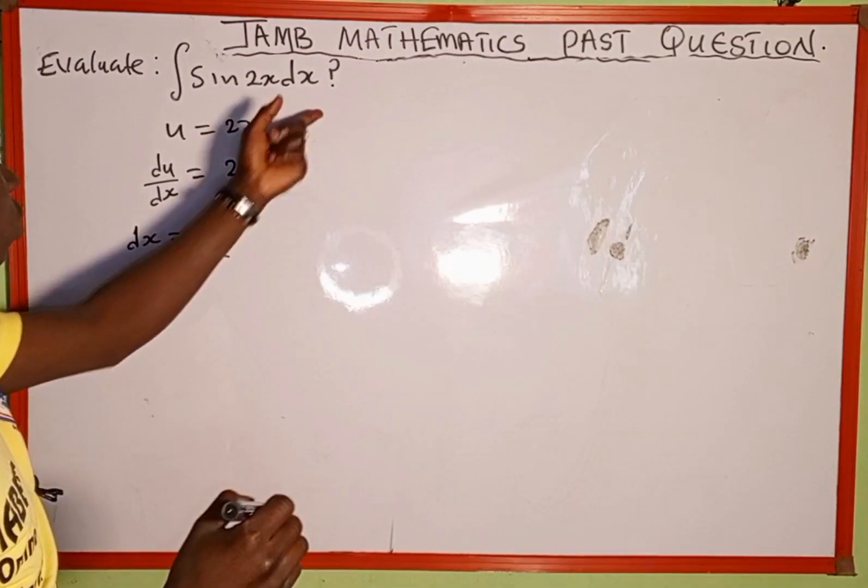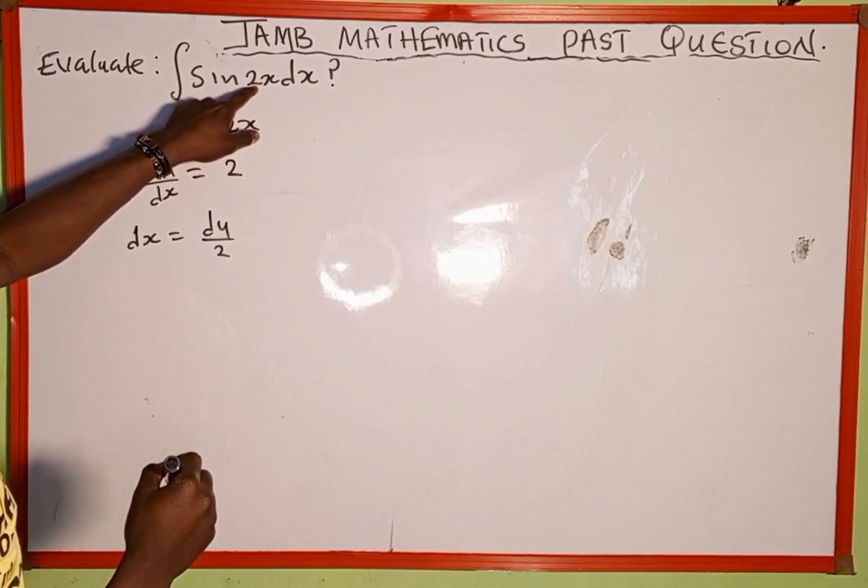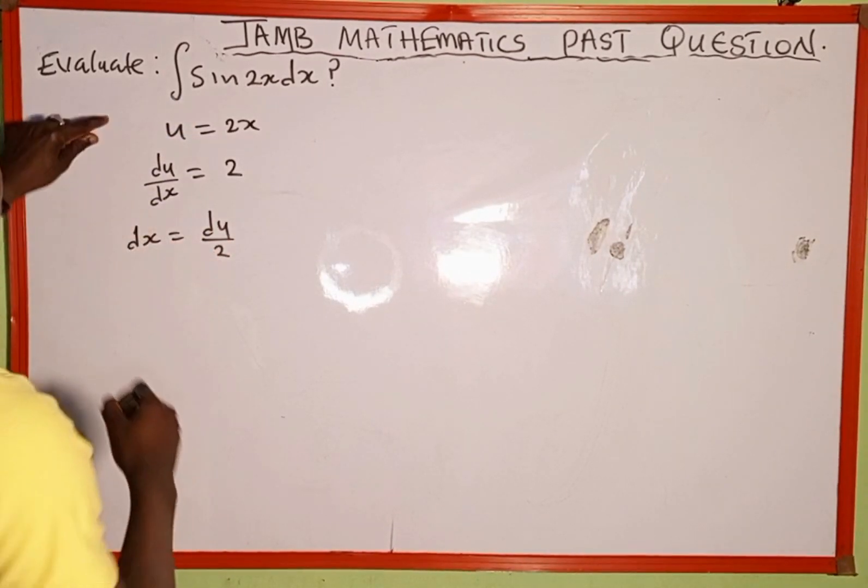Now I'm going to replace it back into the equation. Anywhere we see 2x, we'll replace with u, and anywhere we see dx, we'll replace with du over 2.